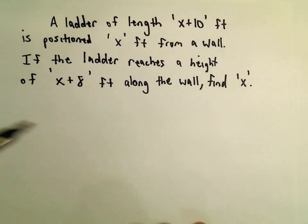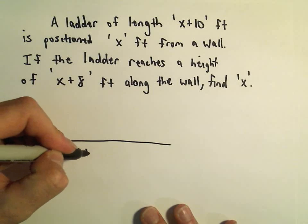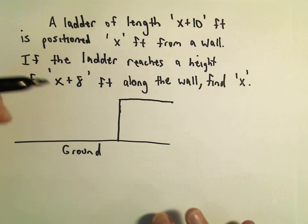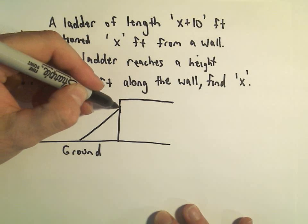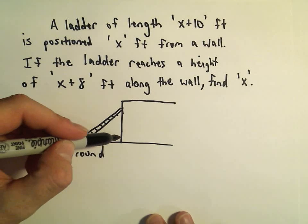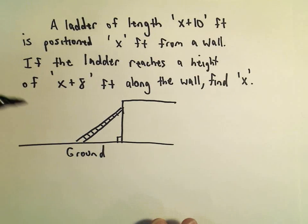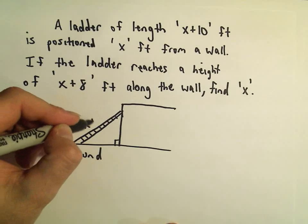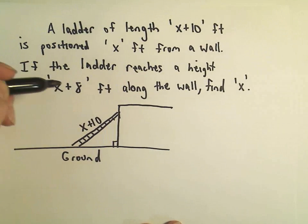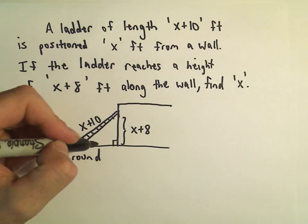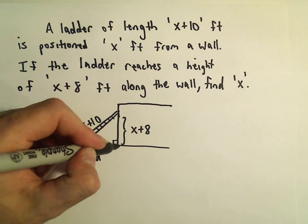I'm just going to make a little picture. Here's the ground, there's the wall of the building, and here's our ladder sitting next to the wall. The thing to observe is we've got a right triangle here that the ladder has made with the wall and the ground, assuming it's a nice flat surface. We know that the ladder has a length of x plus 10 feet, it reaches a height of x plus 8 feet, and it's x feet away from the wall.